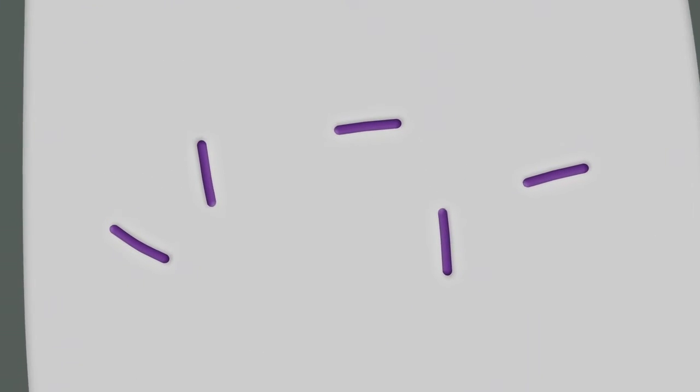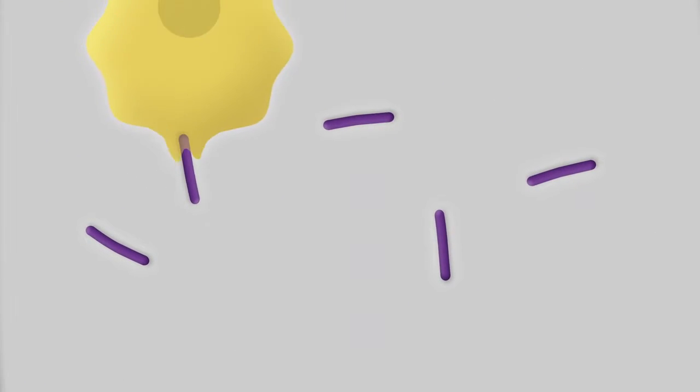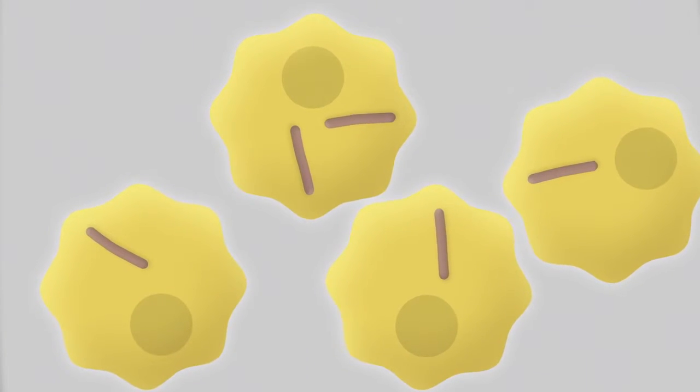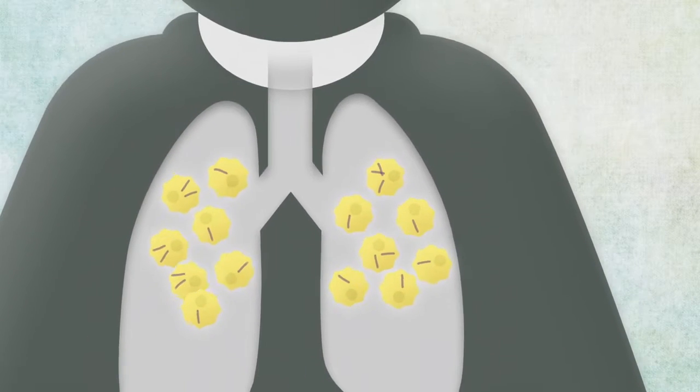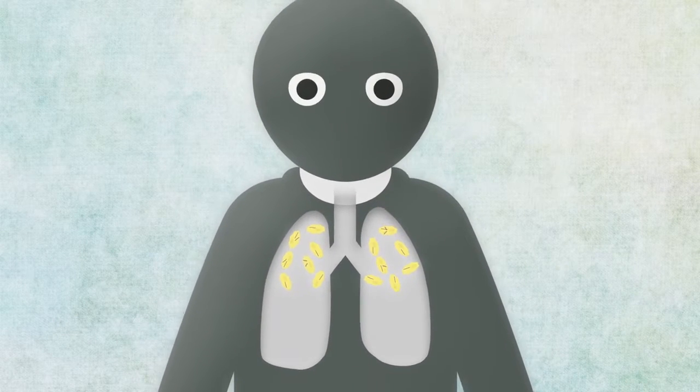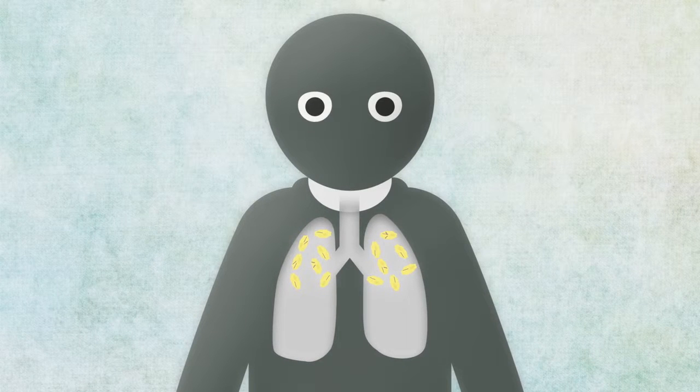The body detects the invasion and mobilizes its immune cells, including macrophages, whose job it is to neutralize the bacteria. If this process of neutralization works, the person will have latent tuberculosis. This means that they are infected with the bacterium but are not actually ill.